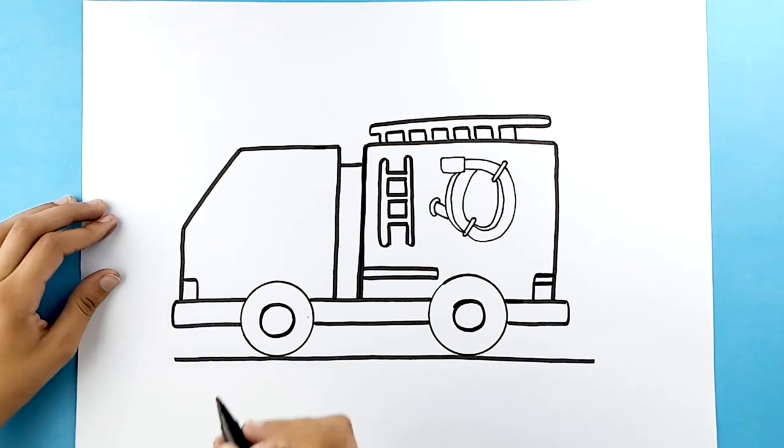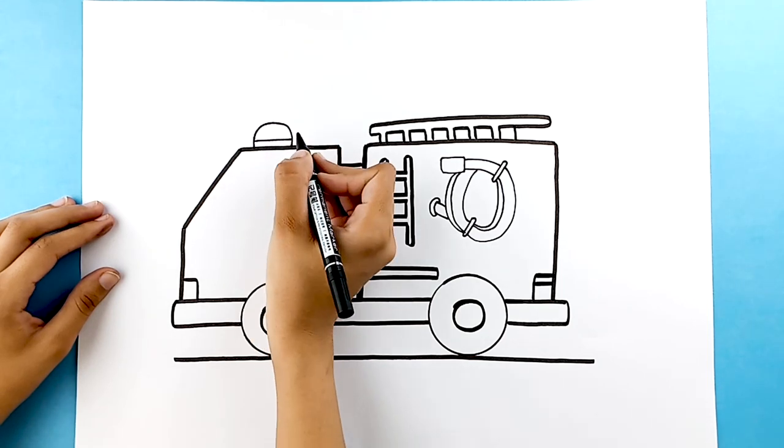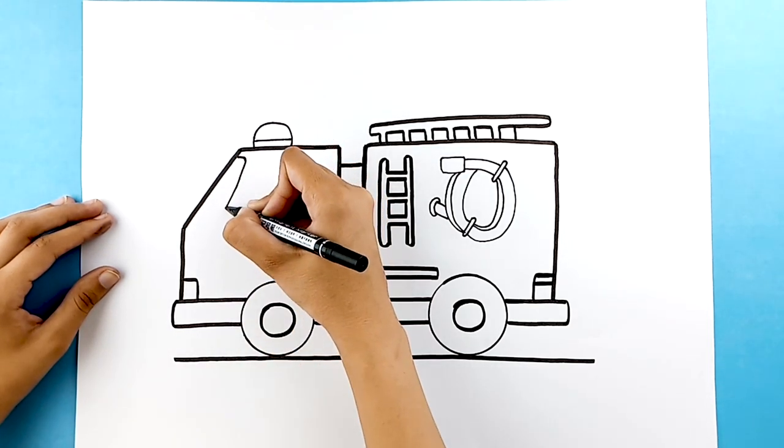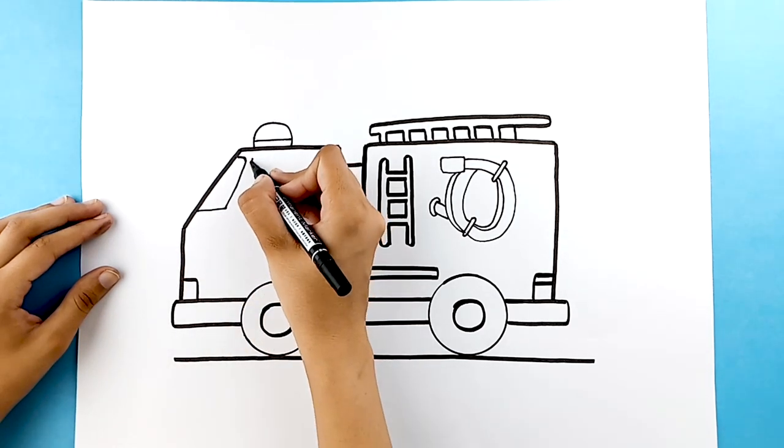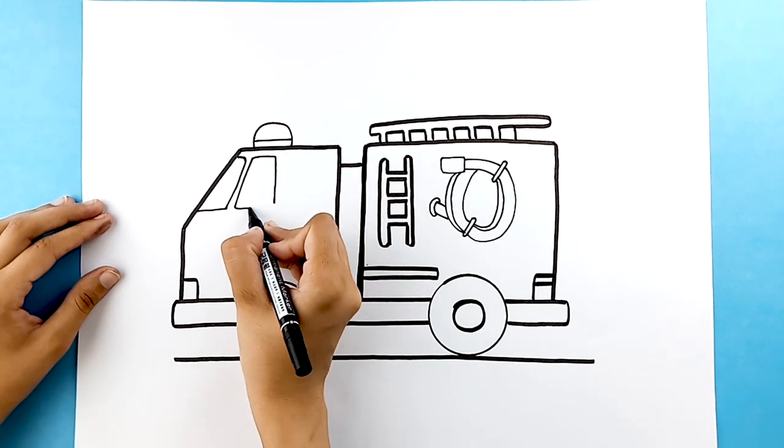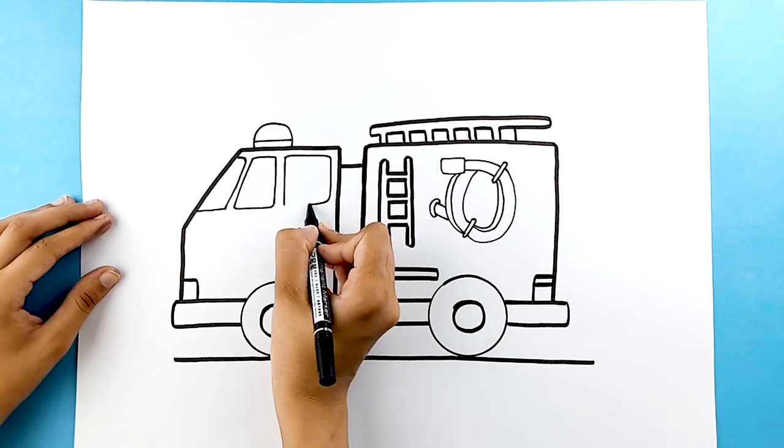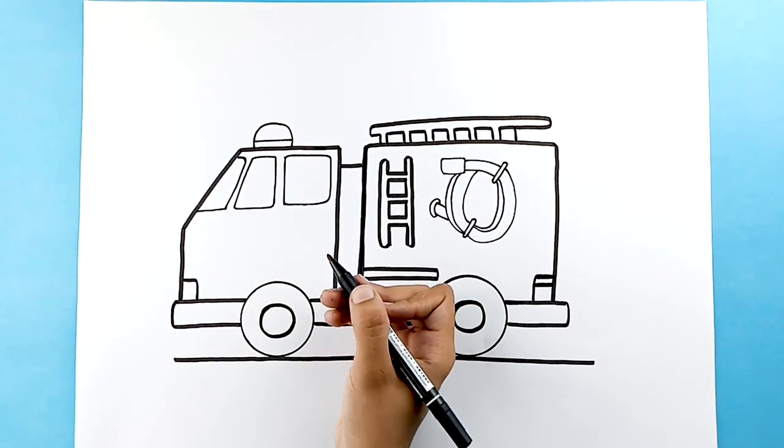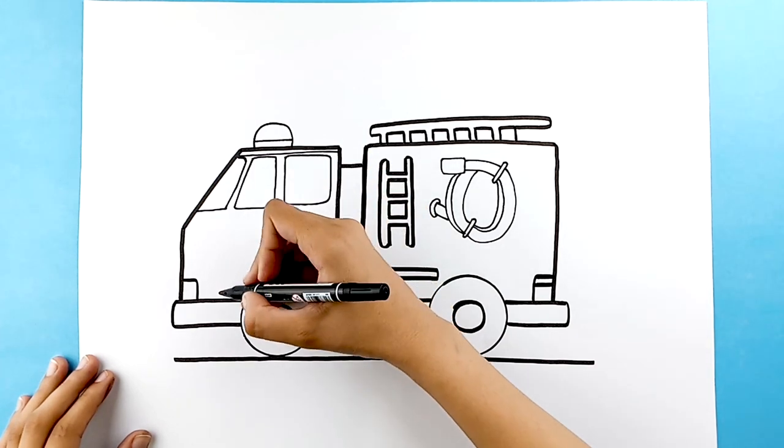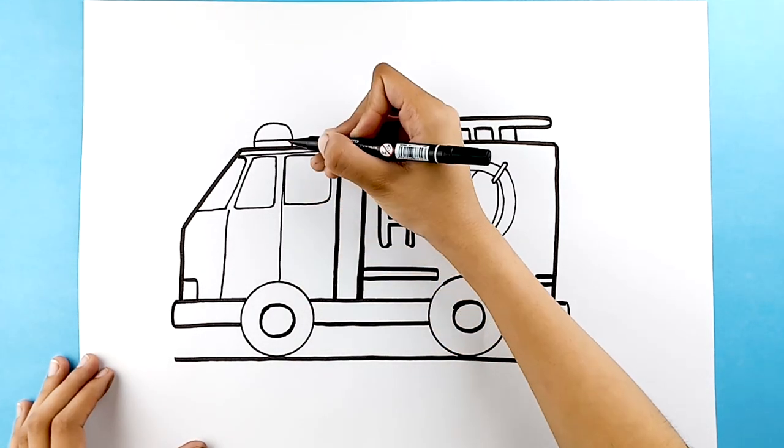Move to the top and draw the siren on top of the driving cabin. And let's draw the lines for the windshield and windows. Draw the lines for the doors and the door handles.